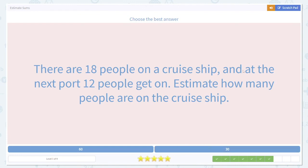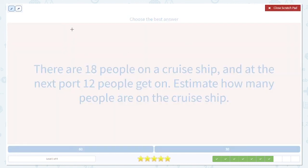There are 18 people on a cruise ship. And at the next port, 12 people get on. Estimate how many people are on the cruise ship. So we have the 18 people that we start with. And then the next stop, we add 12. Nobody gets off, just people getting on. And we want to estimate this total.